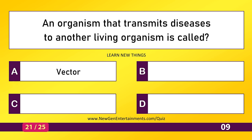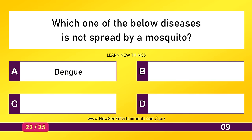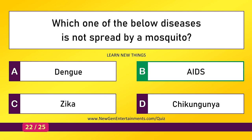An organism that transmits disease to another living organism is called a vector. Which one of the below diseases is not spread by a mosquito? Apes.